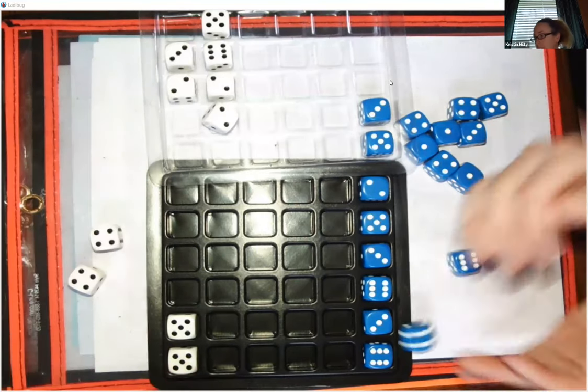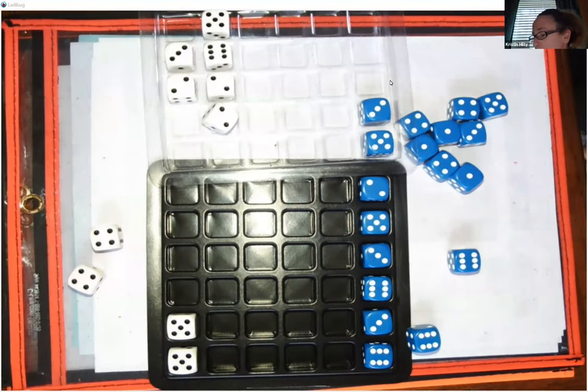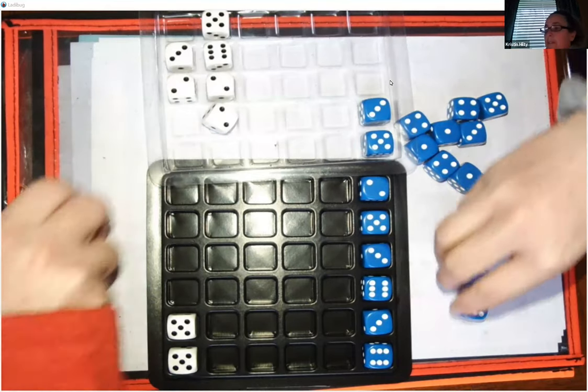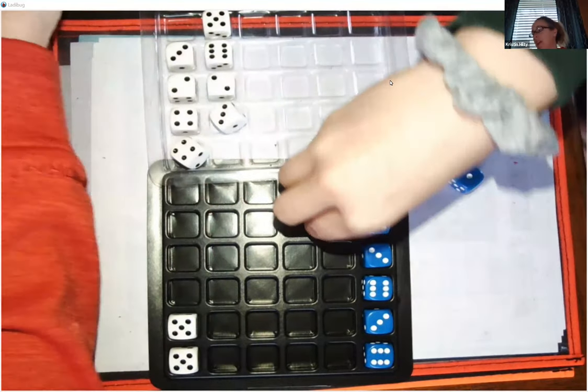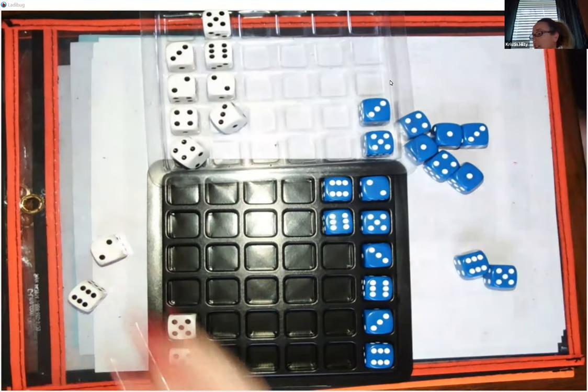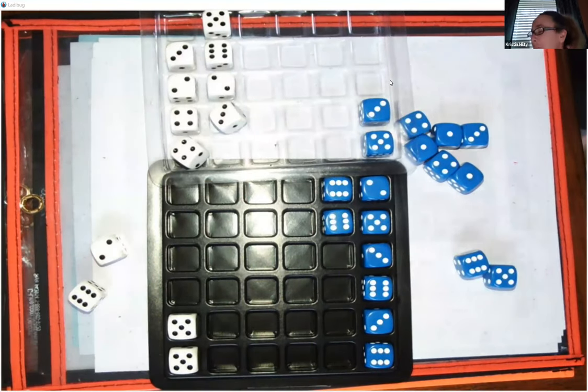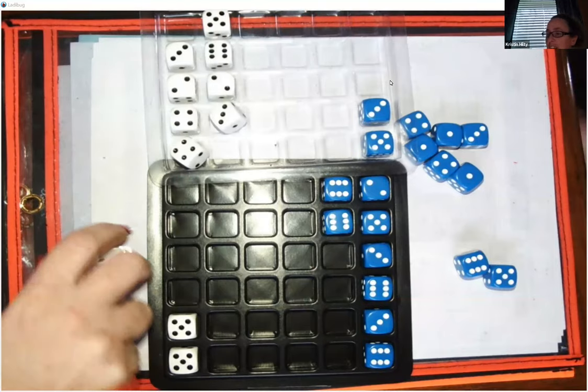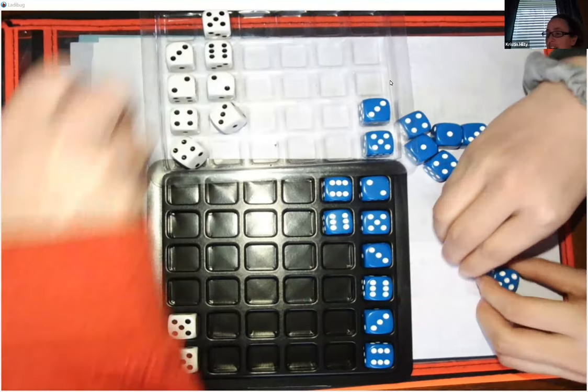All right, rolling two more. Doubles again. Oh, we both got doubles. Four plus four equals eight. Six plus six equals 12. Eight is less than 12. Twelve is greater than eight. So mine are back over here in the barn. I need another winner. Oh my goodness. Six plus two equals eight. Six plus five equals 11. Eight is less than 11. Eleven is greater than eight. I'm back in the barn once again.